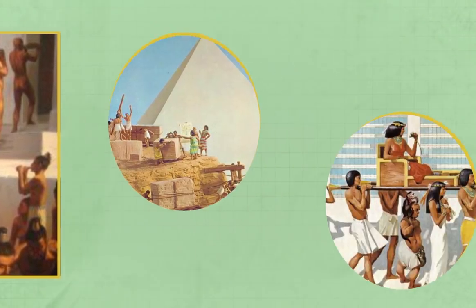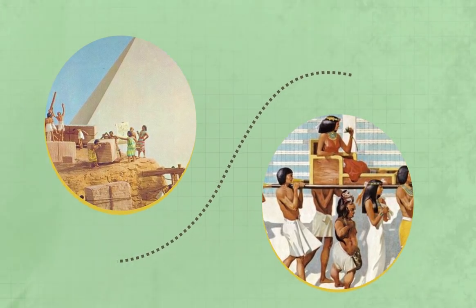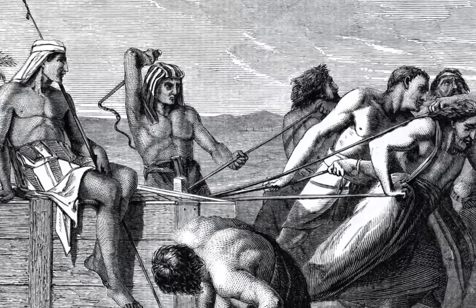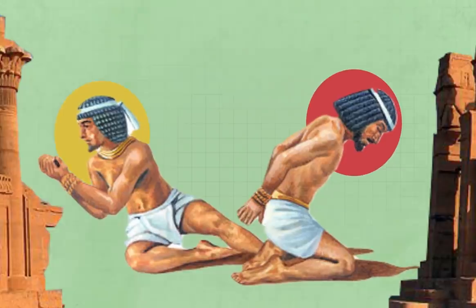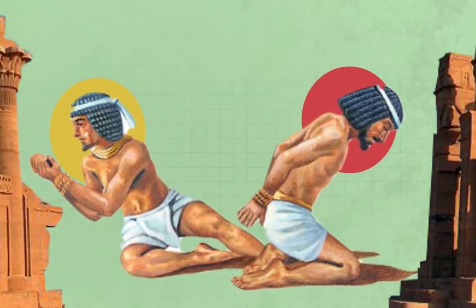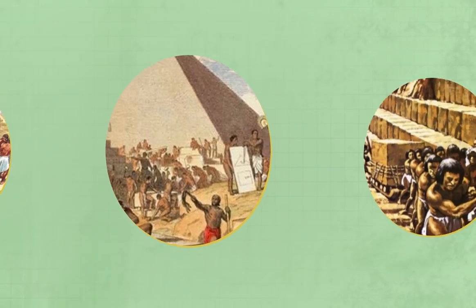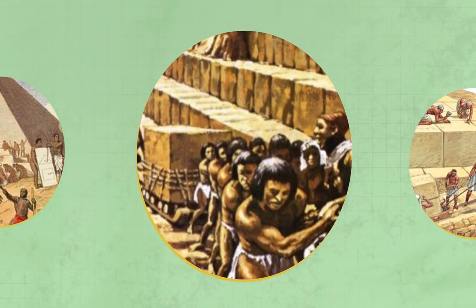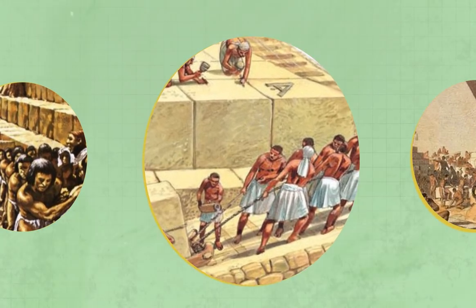Loprieno argues that the virtual absence of legally codified slavery in a society so keen on written documentation cannot be accidental, yet also acknowledges the existence of coerced labour, prisoners of war, and restriction of individual freedoms for certain individuals throughout ancient Egypt. We also don't know if slavery meant for life. It's possible slaves or forced labourers were promised freedom or even actually were freed over time, but evidence for this is limited.